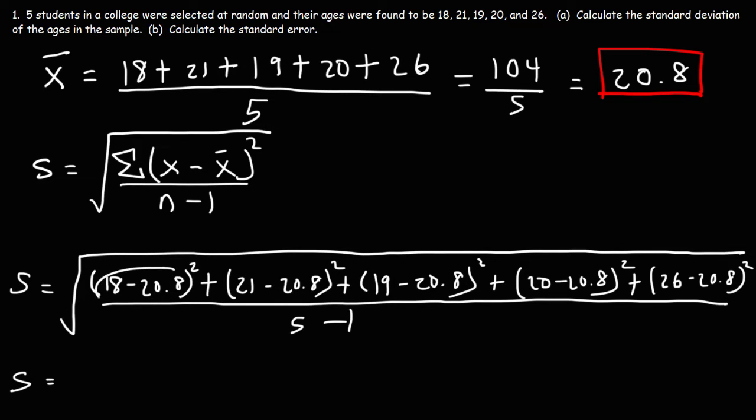Now this 5 ages in the sample, so n is 5. Now let's take this one step at a time. So first, let's find the difference between 18 and 20.8. 18 minus 20.8. That's negative 2.8. 21 minus 20.8. That's going to be positive 0.2.